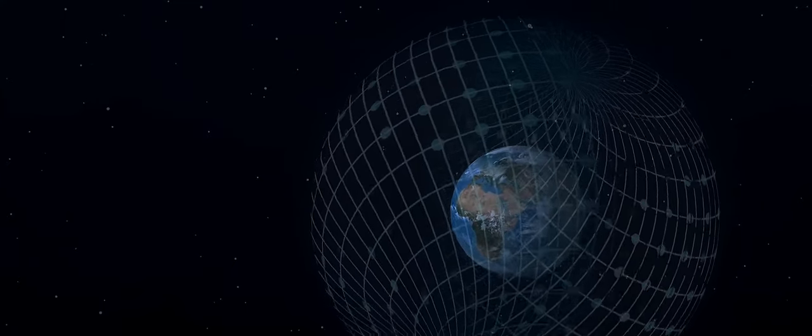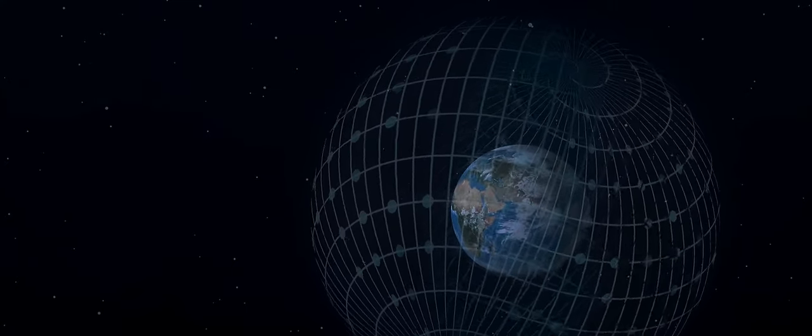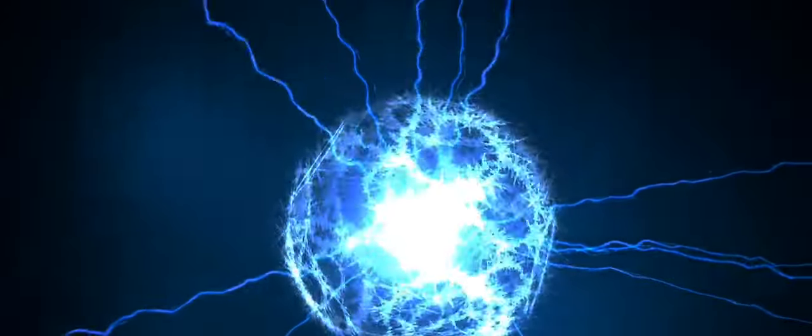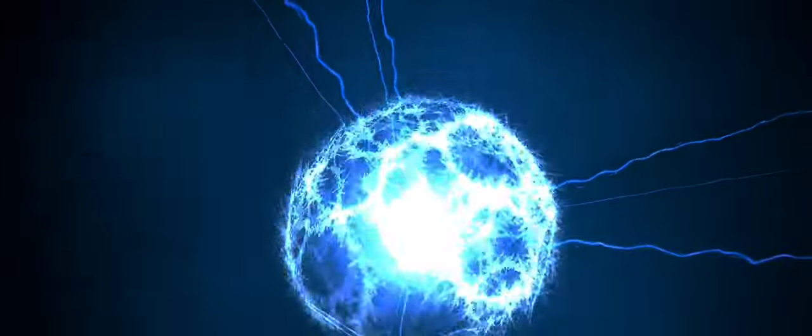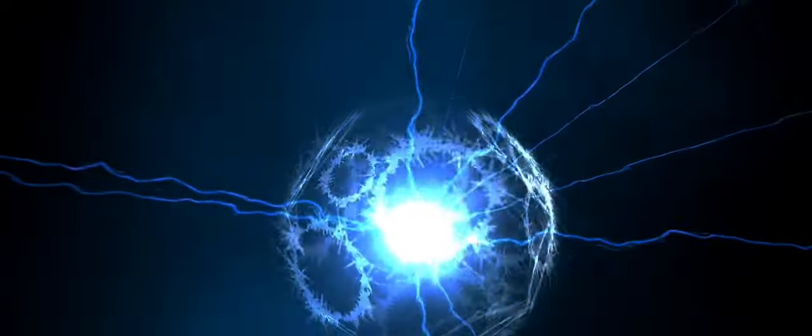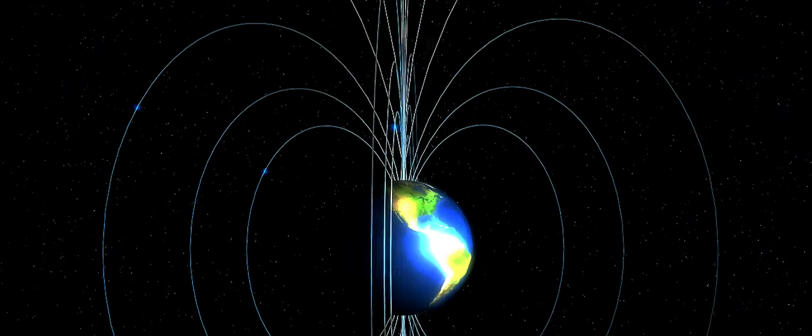This conducting shell, with its magnetic properties, is like a sponge ready to absorb and interact with this force field. This interaction is where the magic happens, or rather, where the electricity is generated. But how does this work? In the simplest terms, when the shell interacts with the Earth's magnetic field, it generates an electric current.